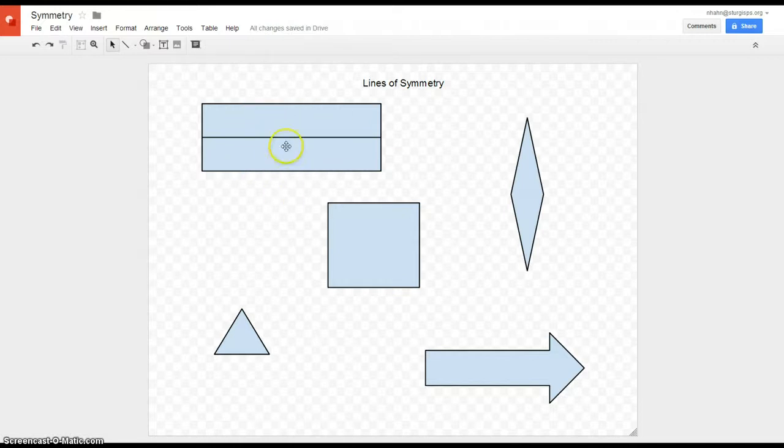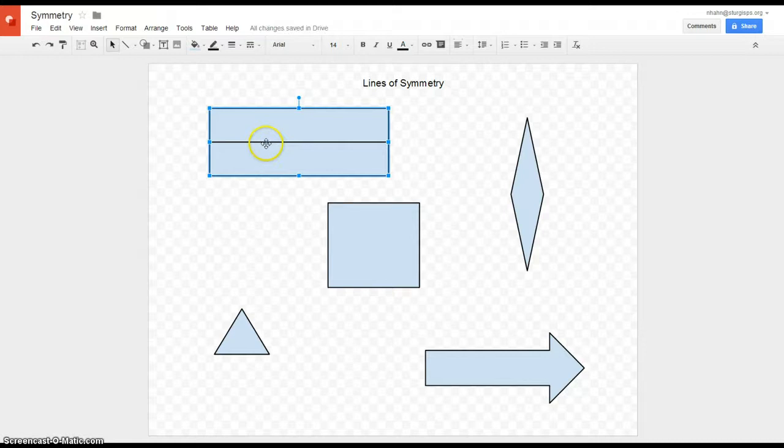Those two are exactly the same. When you fold them, you would only see one of these pieces here. So I'm going to draw this other line back in again. So rectangles have two lines of symmetry.